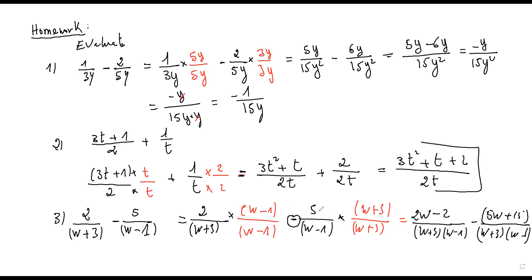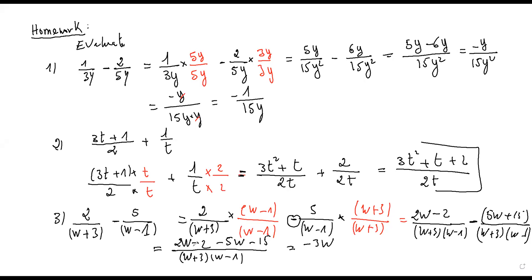When you expand, the minus changes the sign inside the parentheses: minus times 5w becomes negative 5w, and minus times positive fifteen becomes negative fifteen. Over the same denominator w plus three times w minus one. At the end: 2w minus 5w is negative 3w, negative two minus fifteen is negative seventeen. The denominator is w plus three times w minus one.